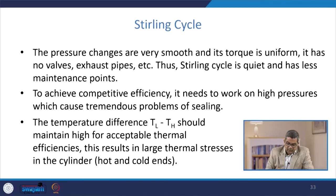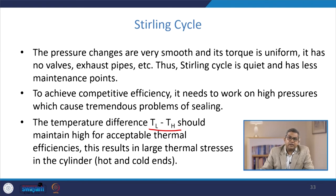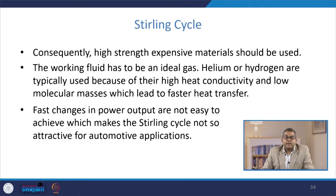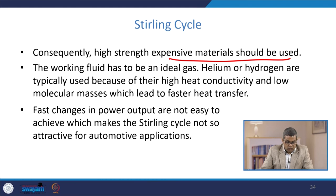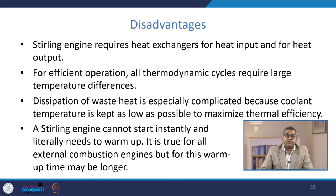To achieve competitive efficiency, the Stirling engine needs to work at high pressures, which causes tremendous problems with sealing. The temperature difference TH − TL must be kept high for acceptable thermal efficiencies, resulting in large thermal stresses in the cylinder at both hot and cold ends. Consequently, high-strength, expensive materials must be used. The working fluid must be an ideal gas—typically helium or hydrogen—because of their high heat conductivity and low molecular mass, which lead to faster heat transfer. Fast changes in power output are not easy to achieve, making the Stirling cycle less attractive for automotive applications.